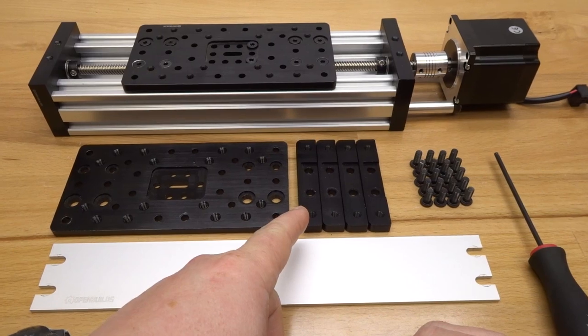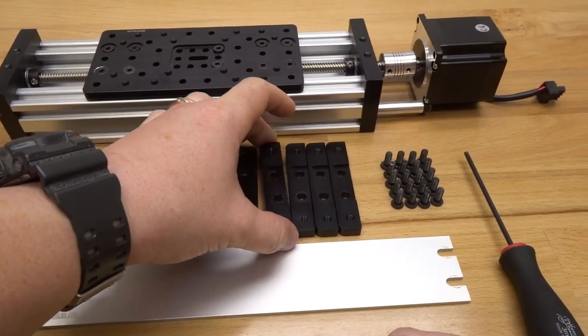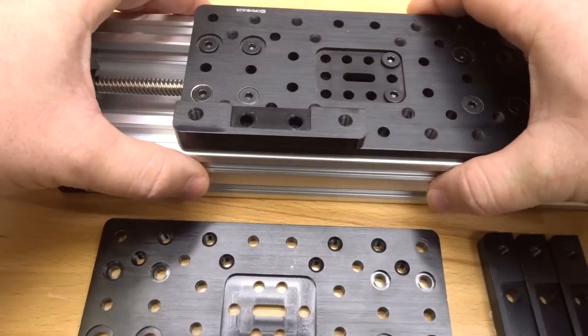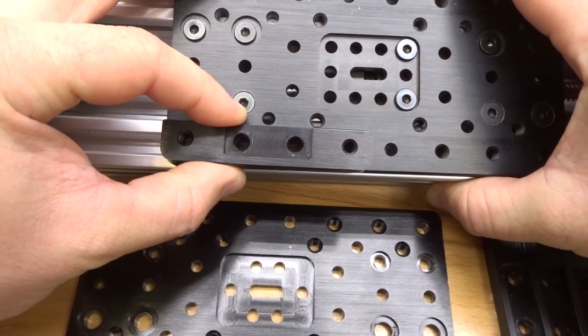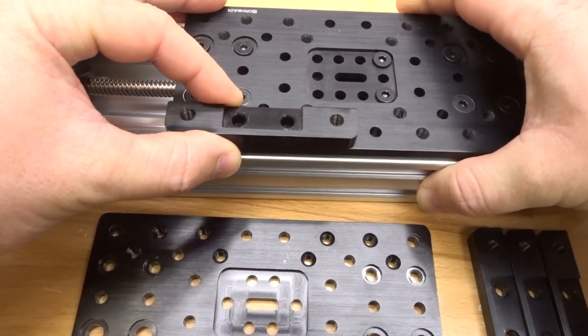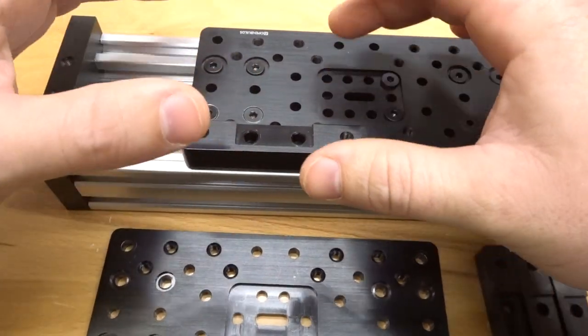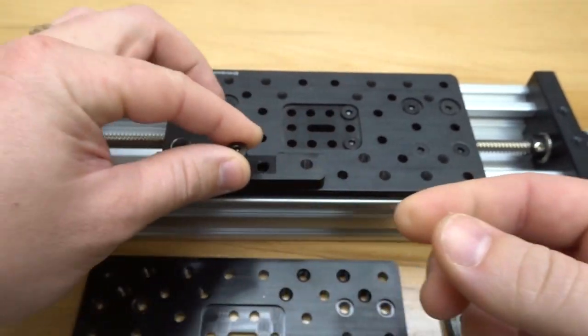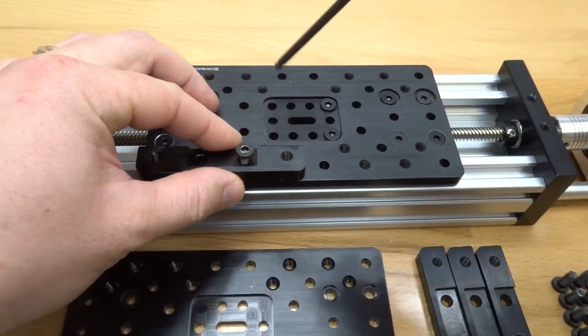We're going to go ahead and mount our riser plates. Each one of these riser plates is going to mount to our double wide gantry plate just like so. You'll see that the holes align to the double wide gantry plate, so we're simply going to insert the 12 millimeter screws and mount that into place.